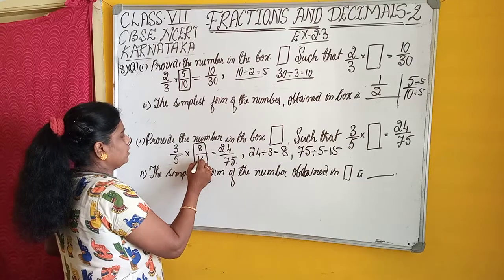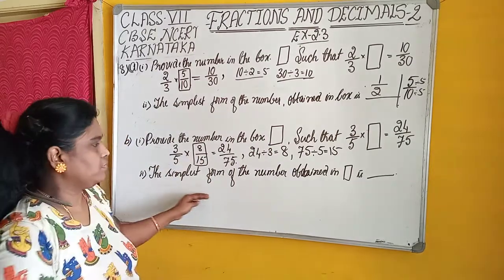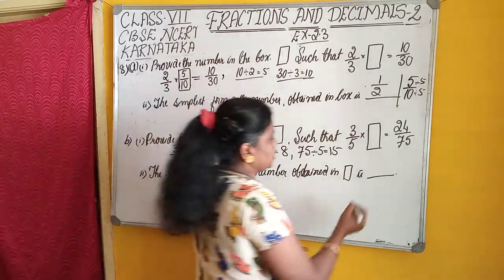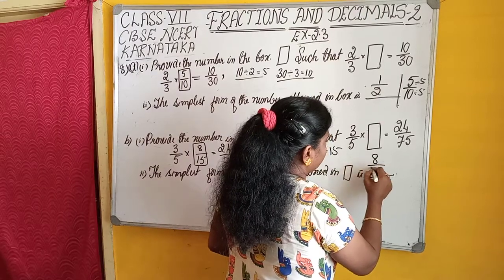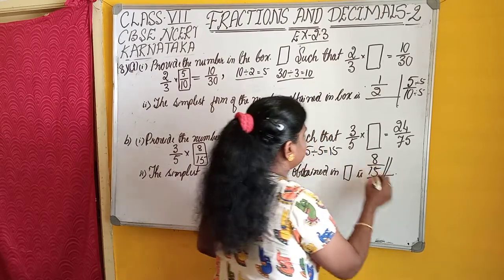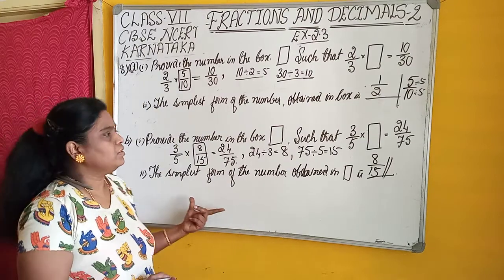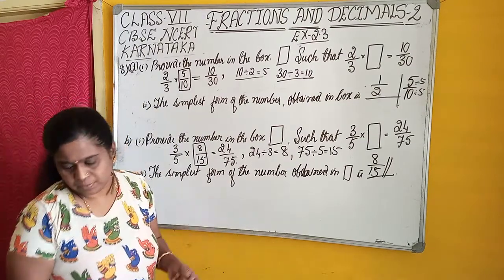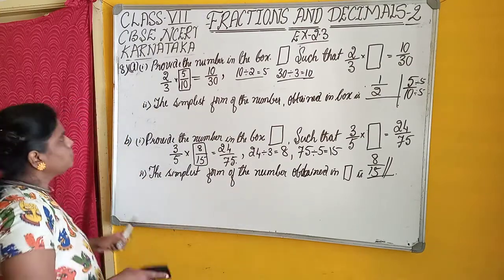8/15. The simplest form of the number obtained in the box is 8/15. Is it not possible to reduce to lowest form? Understood students? It is a very easy problem. Let us move on to the next problem.